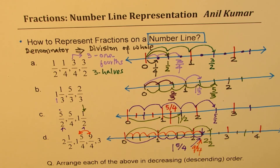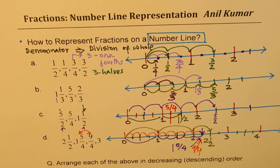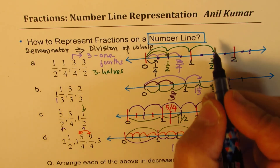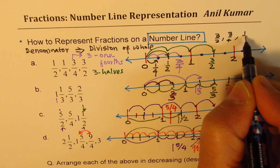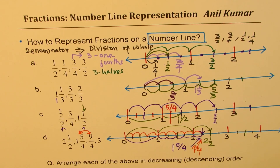That is how you place all the fractions on a number line. It's a simple process — remember that each division represents the denominator. Once you've done all this, I'd like you to arrange the above in decreasing order. For the first one, it will be three by two, then three by four, then one half, then one by four — that is the descending order. Likewise, do the others. Feel free to share my videos, write comments, and if you need more similar questions, post them. Thanks for watching and all the best.